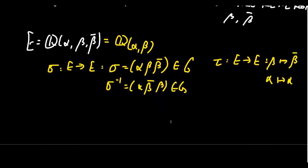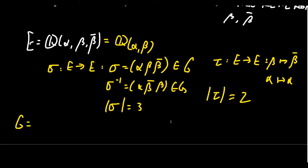Notice that τ is a map of order two and σ is a map of order three. Since our group has elements of order three and two, by Lagrange's theorem it must have order six. This tells us that the Galois group in this situation is in fact all of S3.